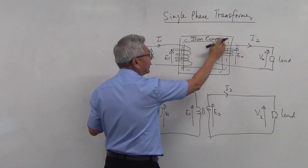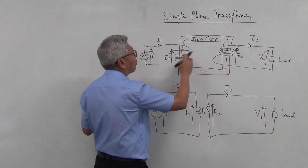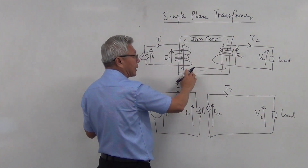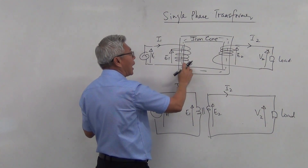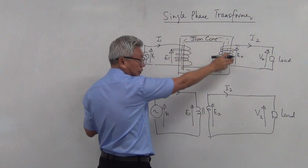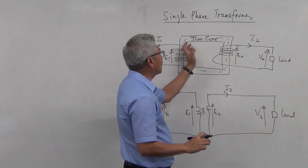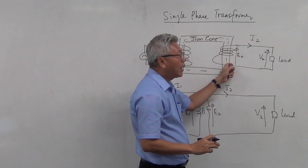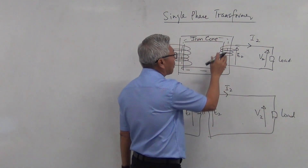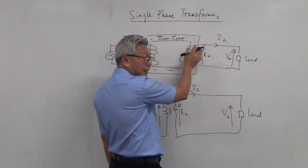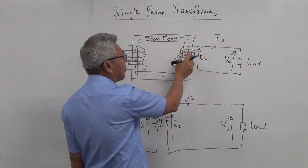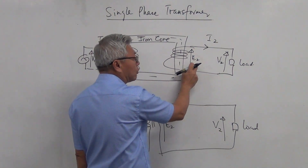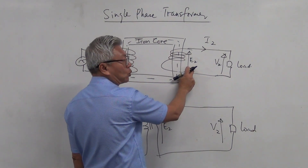The flux goes through the iron core, and some through the air. The purpose of the iron core is to provide a mechanical structure as well as capturing the magnetic flux. This iron core conducts the magnetic flux to link to the secondary coil. And this pulsating magnetic flux — because it's an AC sine wave — cuts the secondary coil, and the secondary voltage E2 is induced.